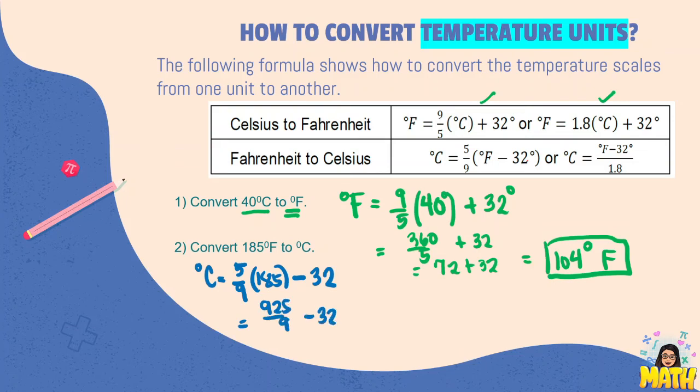And then we put here the given, so 185 times 5, that's 925 over 9 minus 32. So this will give us 102.78 minus 32, that is 70.78 degrees Celsius.